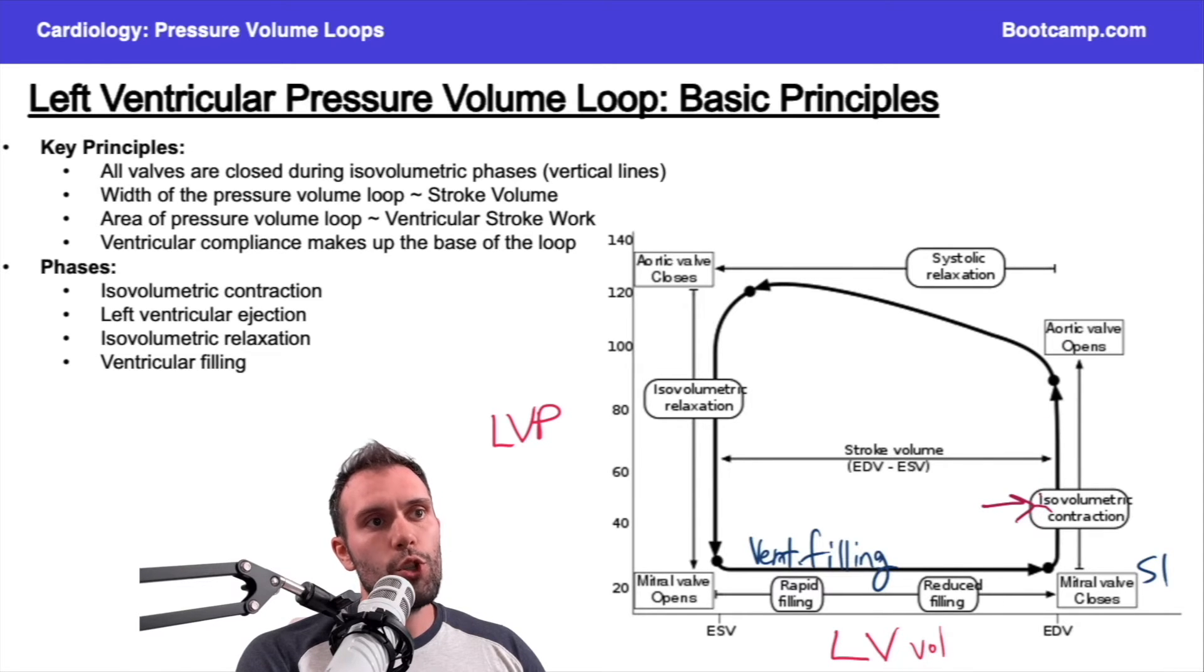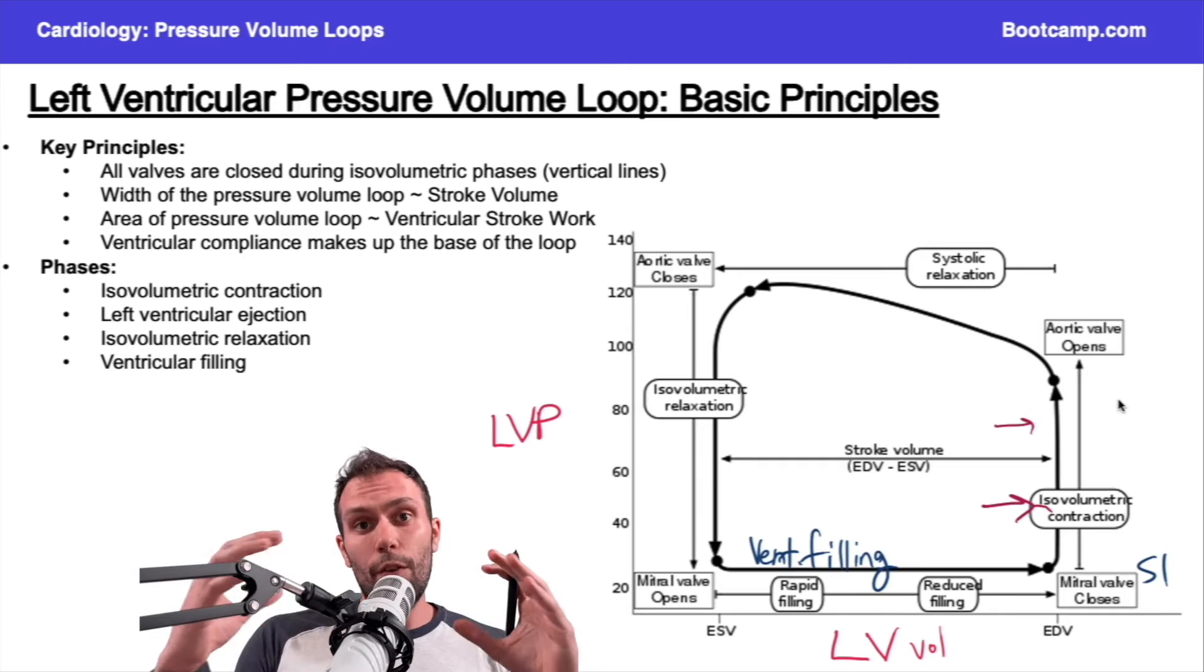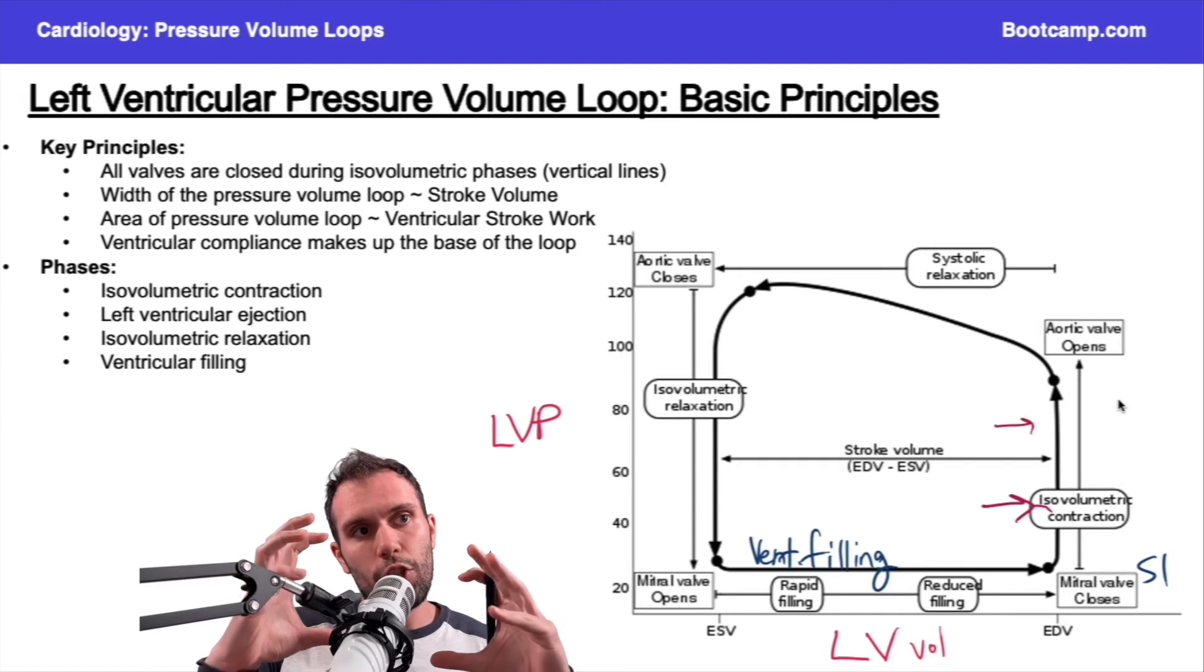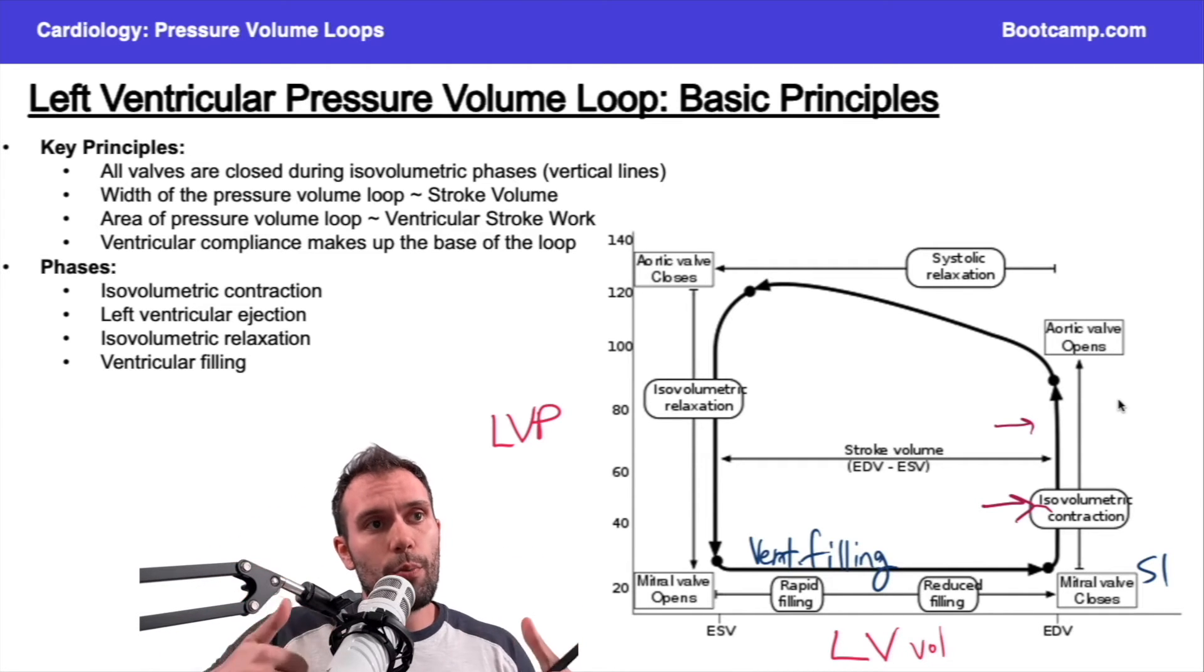There's no change in the volume. Normally, this phase will have a very vertical straight line because there's no change in the volume. All the valves are closed and there's a contraction happening, but we can't change the volume, so the pressure shoots up.